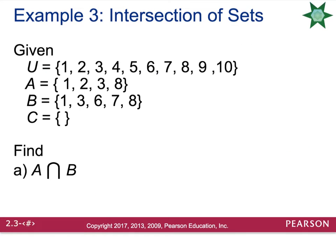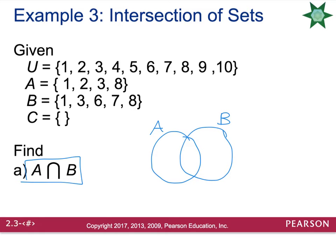Let's look at an example. The universal set is the numbers 1 through 10. Set A is {1, 2, 3, 8} and set B is {1, 3, 6, 7, 8}. They've asked me to find the intersection of A and B — the numbers that both sets have in common. A and B both have a 1, they both have a 3, and they both have an 8. So the intersection would be {1, 3, 8}.